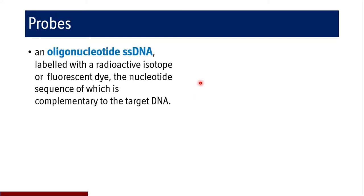Now coming to details of blot transfer techniques, first let us understand what probes are. A probe is an oligonucleotide single-stranded DNA, and to be detected properly it is labeled with a radioactive isotope or a fluorescent dye. When it binds to the particular sequence of interest, that is called hybridization. The nucleotide sequence of the probe is complementary to the target DNA, and it is manufactured in such a way that it is complementary to the sequence of interest — whether DNA, RNA, or amino acid sequence in proteins.